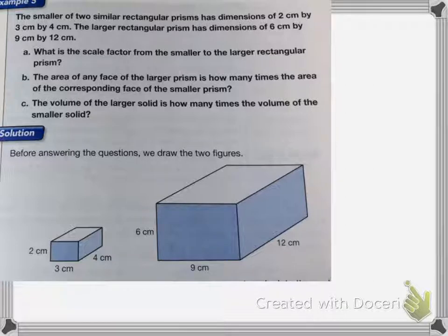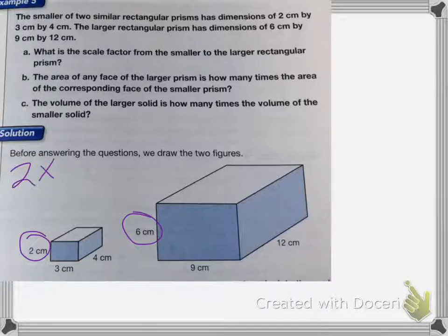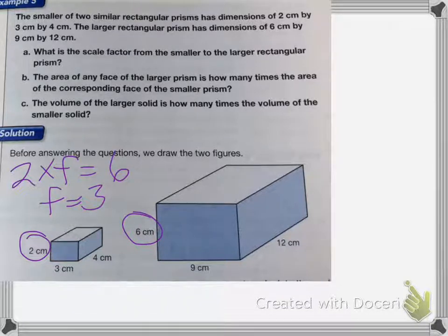All right, so here we have the smaller of the two rectangular prisms has the dimensions of 2 centimeters by 3 centimeters by 4 centimeters. And the largest rectangle is 6 centimeters by 9 centimeters by 12 centimeters. So first wants us to figure out what is the scale factor from the smaller to the larger triangle, or rectangle. So I'm going to pick a side. So I'm going to pick this side here and this side here. So I'm going to think 2 times some scale factor is going to be equal to 6. So we know that the scale factor is 3. So the scale factor is 3 times bigger. The larger rectangle is 3 times bigger than the smaller one.